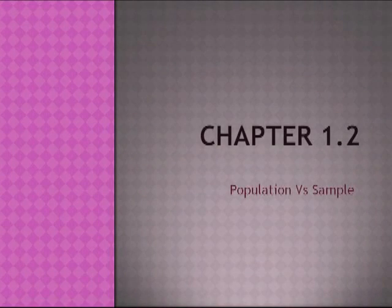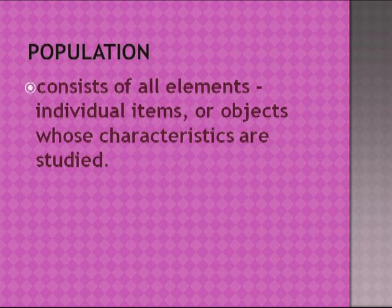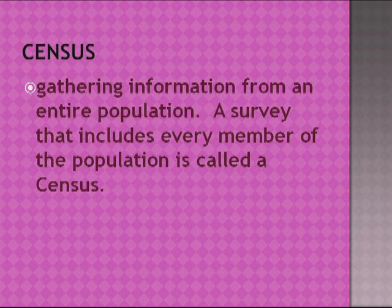Chapter 1.2: Population vs. Sample. A population consists of all elements, individual items, or objects whose characteristics are being studied. A census is a survey that gathers information from an entire population, including every member.